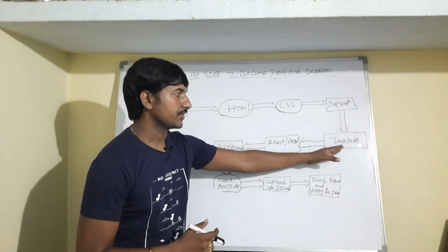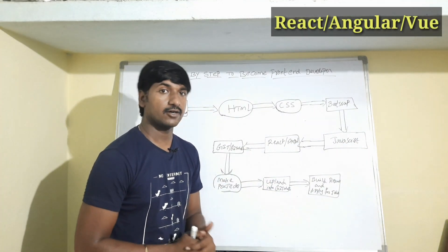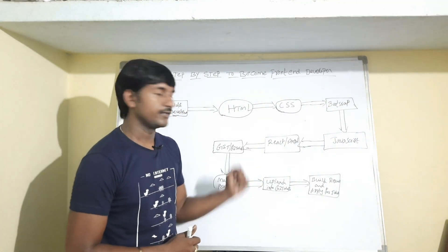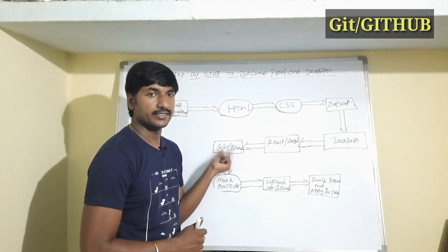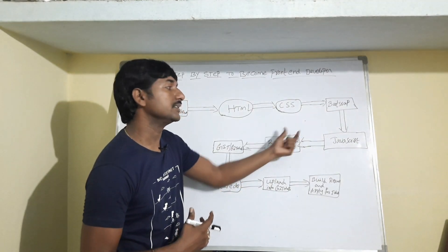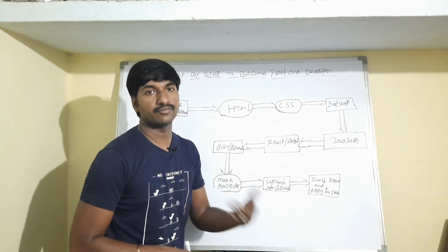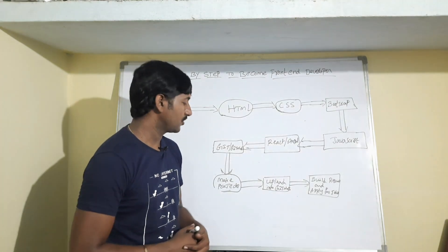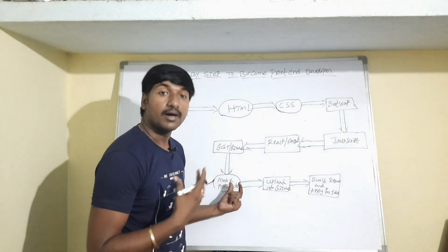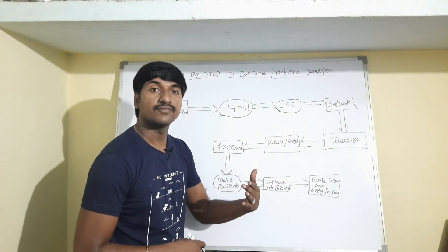After learning JavaScript, you have to learn one front-end framework — like React, Angular, or Vue. After learning any framework, you have to learn Git and GitHub. Then you should start making projects using these technologies — JavaScript, Bootstrap, and React — to create dynamic websites or web applications. After creating some small projects, upload those projects to GitHub and create a link for each project.